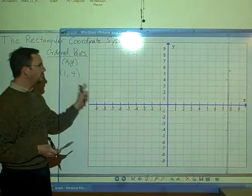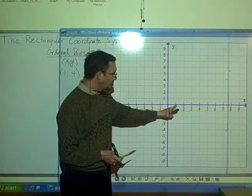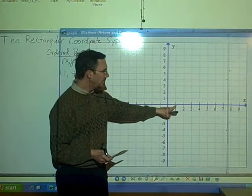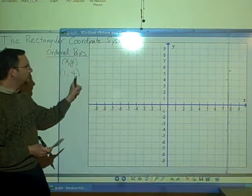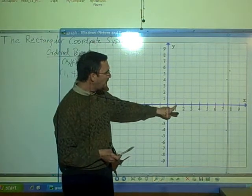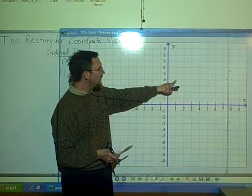We follow along the x-axis until we get to x equals 1. That would be right here. Then from this point, since y is 4, we go up 4 units along the y-axis.